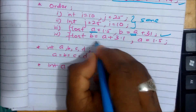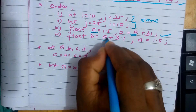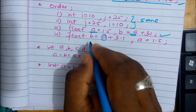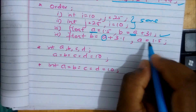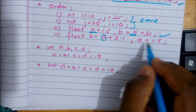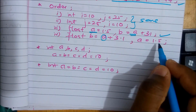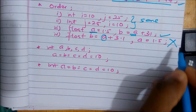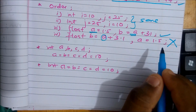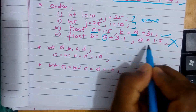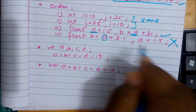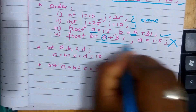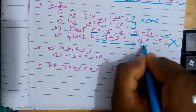If you want to write, you will write float b initialize. If you want to write, type a initialize. For the statement, then write the statement.